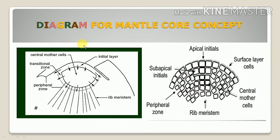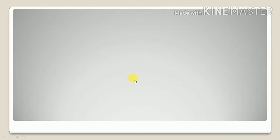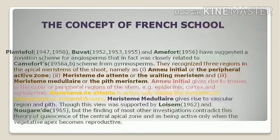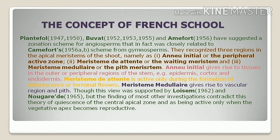The mantle core concept is essentially a substitute for the tunica and corpus theories. The tunica is regarded as the outer covering. In the diagram for the mantle core concept, the outer layer — the mantle — shows anticlinal and periclinal divisions, while the inner is the core, as studied by Popham and Chan.